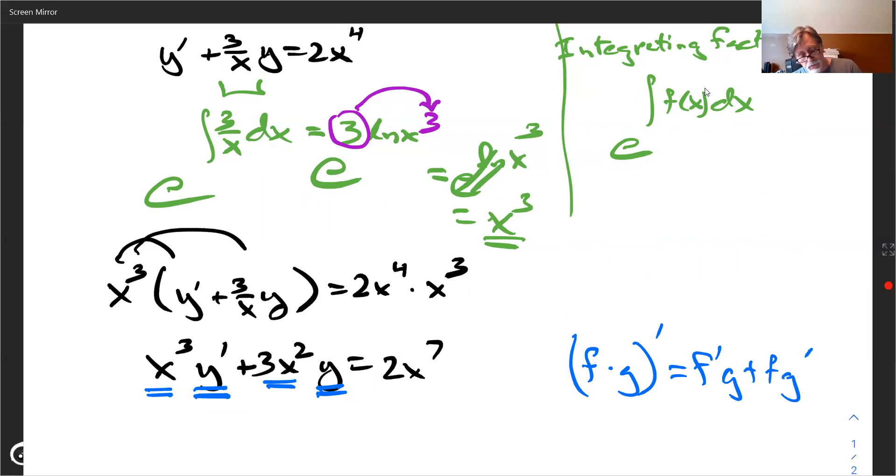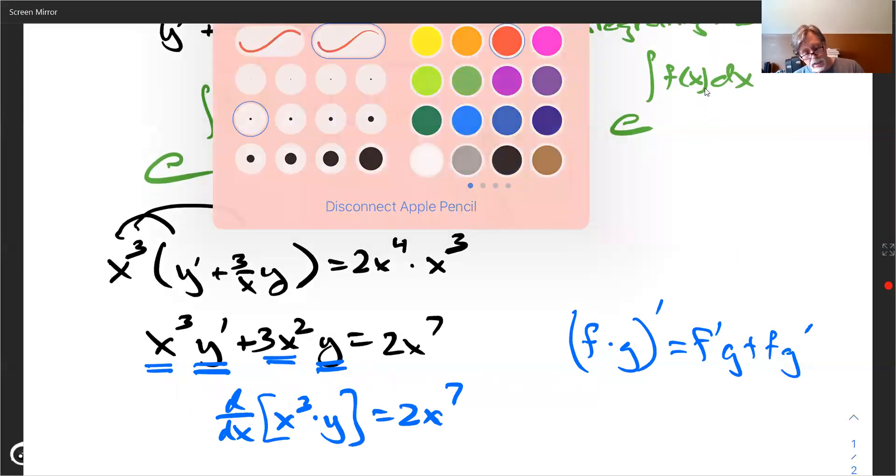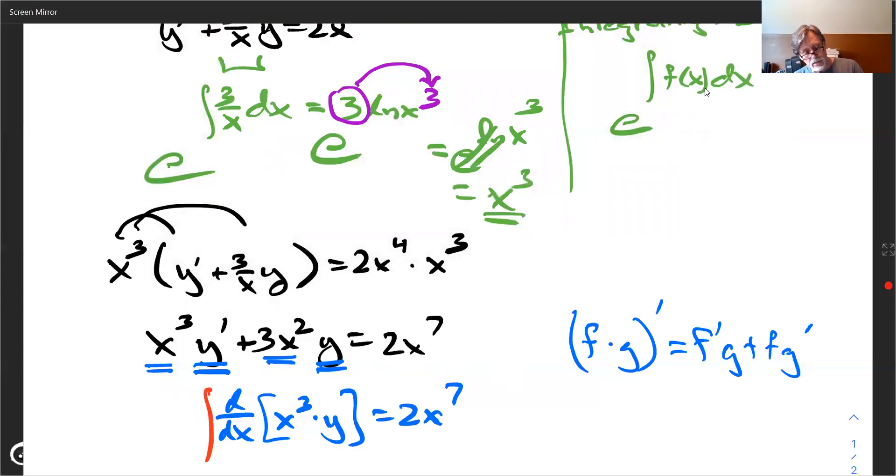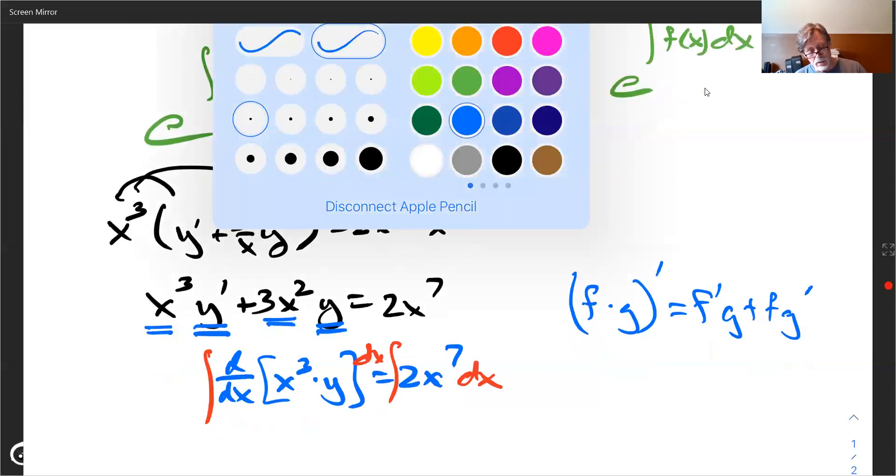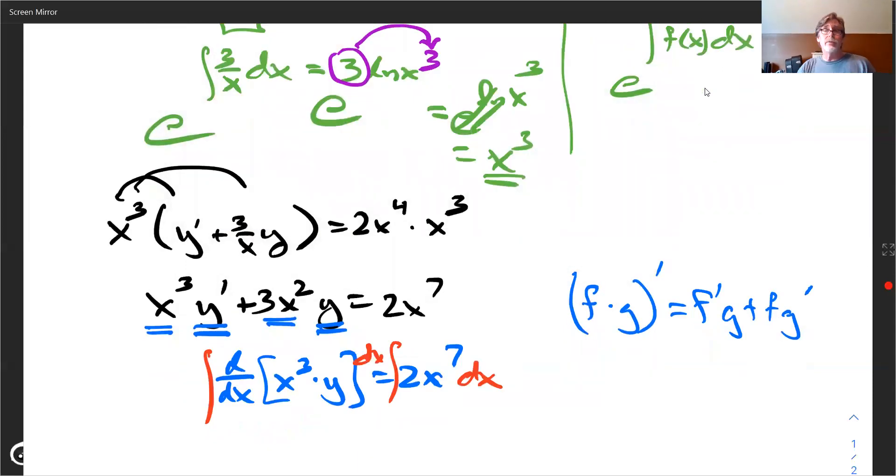That's why we use this integrating factor because now we can say that this side is actually the product rule derivative of this function x cubed times this other function y. And on the other side, just waiting for us to get done over there is 2 x to the seventh. So the beautiful news about this is now we can integrate with respect to x both sides and the definite integral and the anti-derivative derivative of a derivative. Bada bing,